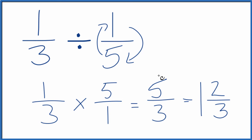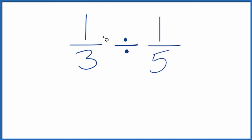There's one more way we can do this. We could multiply 1 times 5, that gives us 5, and 3 times 1, that gives us 3, and we get 5/3. It's really what we did before, and we get the same answer.